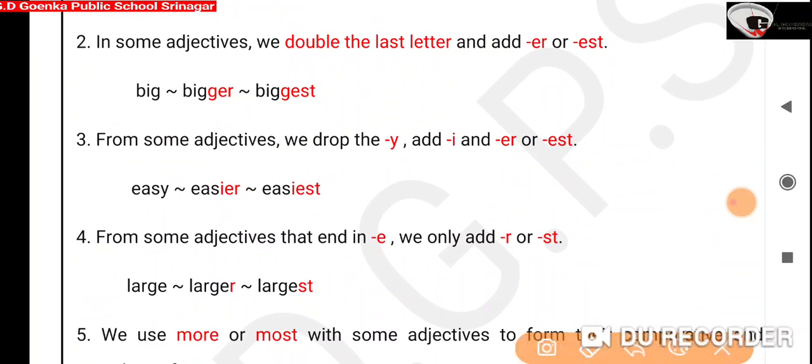Rule number 3 is where in some adjectives, we drop the y and add i and then add -er and -est. For example, easy is in positive degree. To make it comparative, we add -ir and remove the y. And for superlative, again we remove the y and add -iest. Easy, easier, easiest.